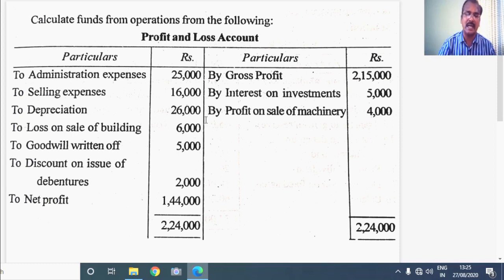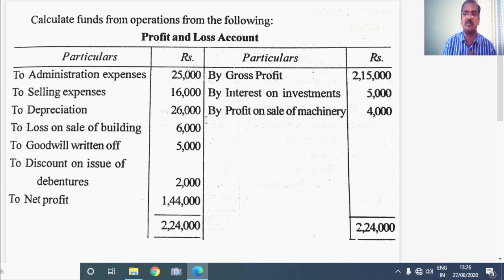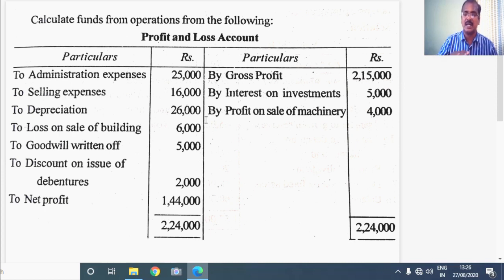What about the incomes? Any income which is credited in the P&L account is a non-operating income. So the non-operating incomes which were added with the gross profit to calculate net profit are to be subtracted to find out the funds from operations or operating income. The items to be added back with the net profit are the non-operating or non-fund expenses. The non-operating incomes are to be subtracted from the net profit so that we find the middle figure between GP and NP, which is nothing but operating profit or funds from operations.